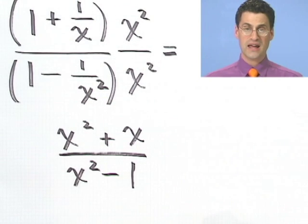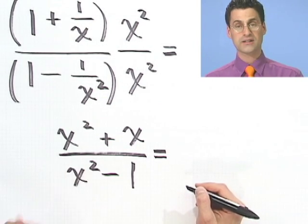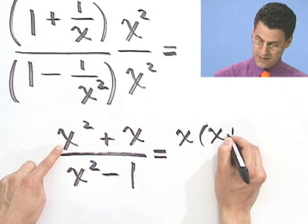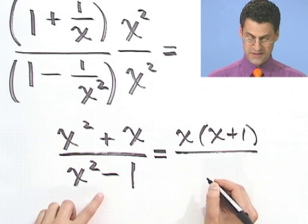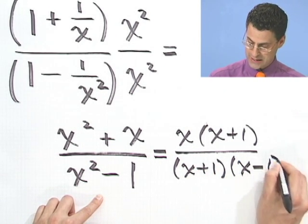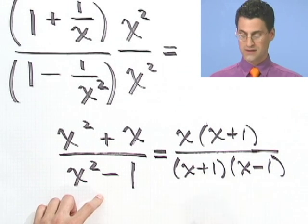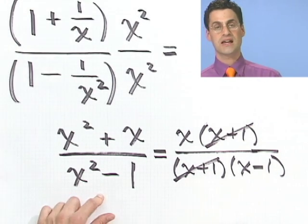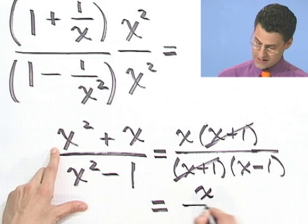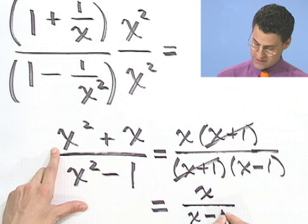That's certainly a fine answer, but if you really get into it, you can factor all over the place. Let's factor out the common factor of x on top, leaving x times x plus 1. And notice that the bottom is the difference of two perfect squares — x squared minus 1 factors as x plus 1 times x minus 1. We can actually cancel away the x plus 1's. So if someone said they want this in lowest terms, the answer is x over x minus 1. This complicated-looking thing turns out to be just x over x minus 1.